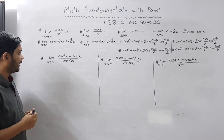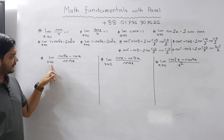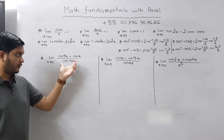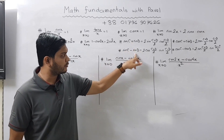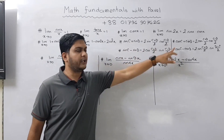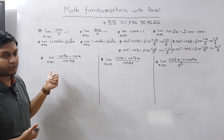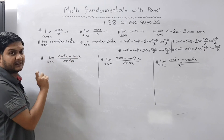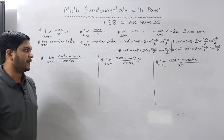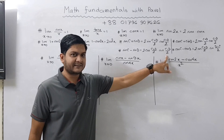Let's start with the first problem. The problem statement is: limit as x tends to 0, with sin 5x minus sin x in the numerator and sin 4x in the denominator. We will be using these four formulas to solve this.